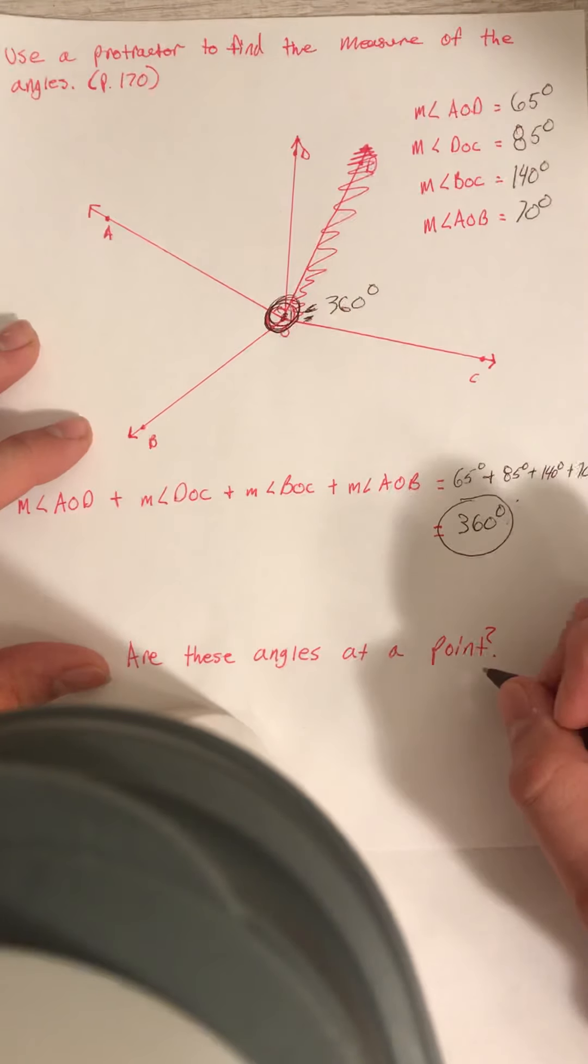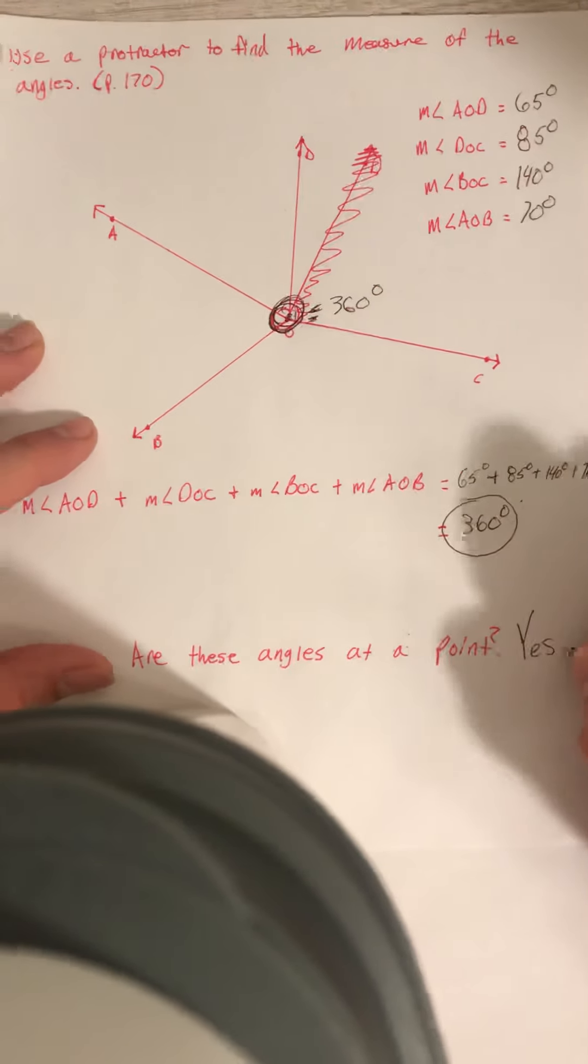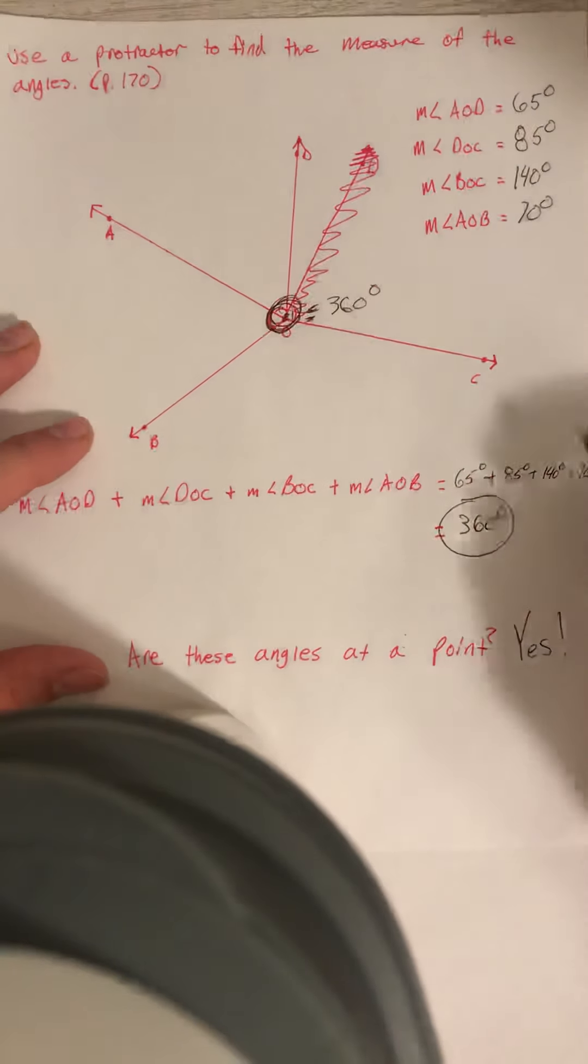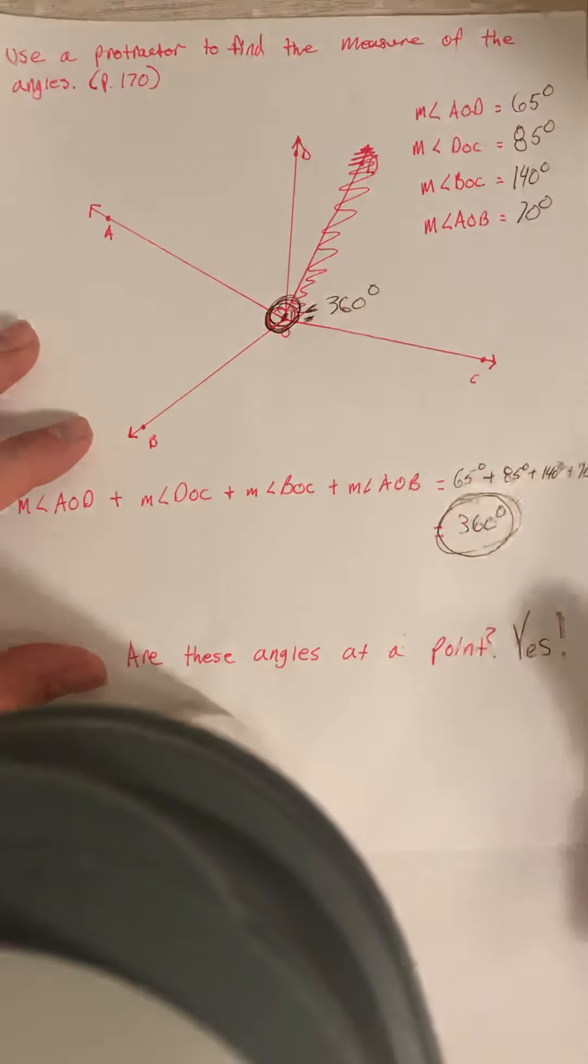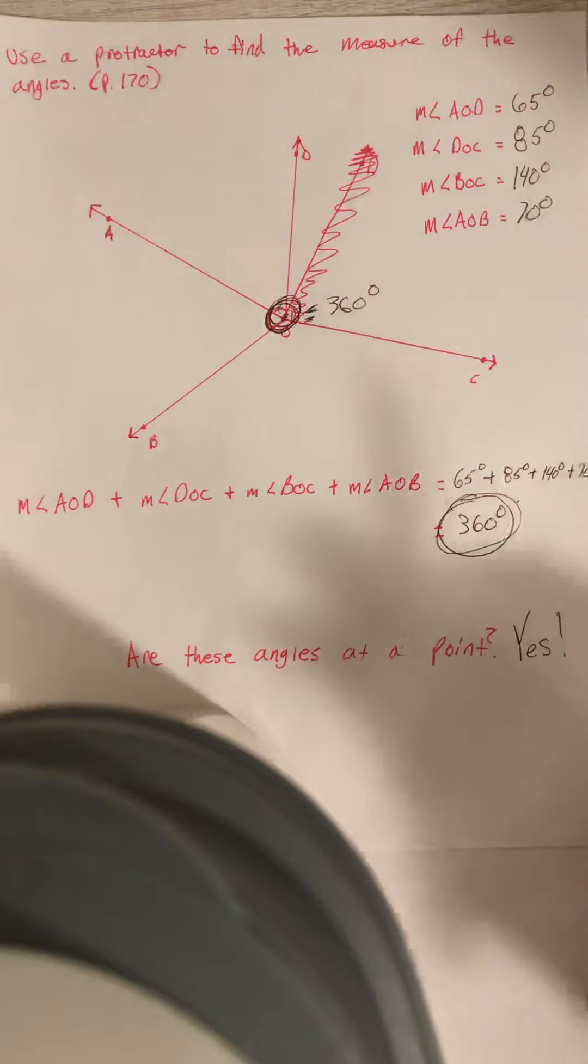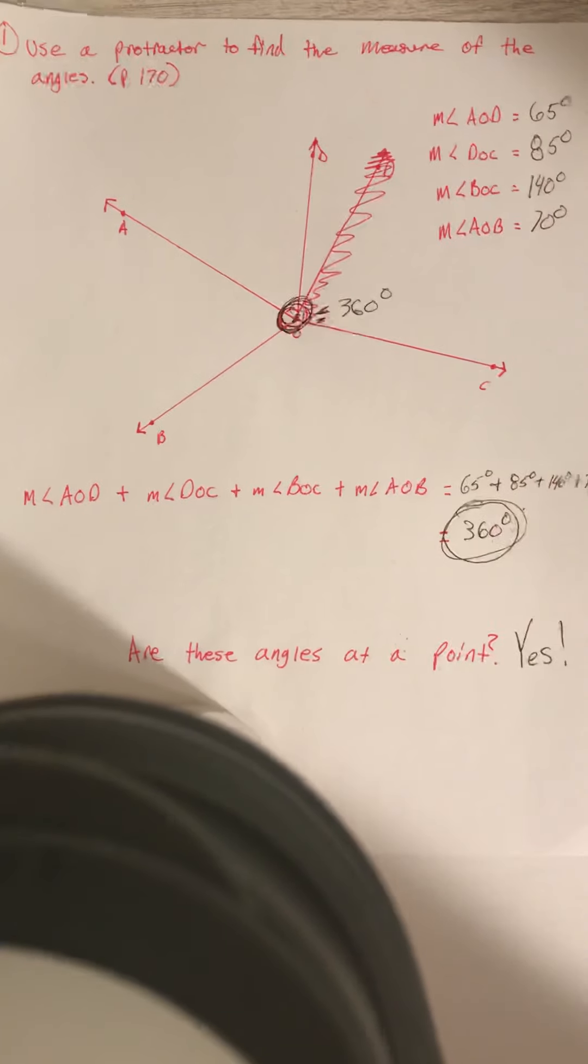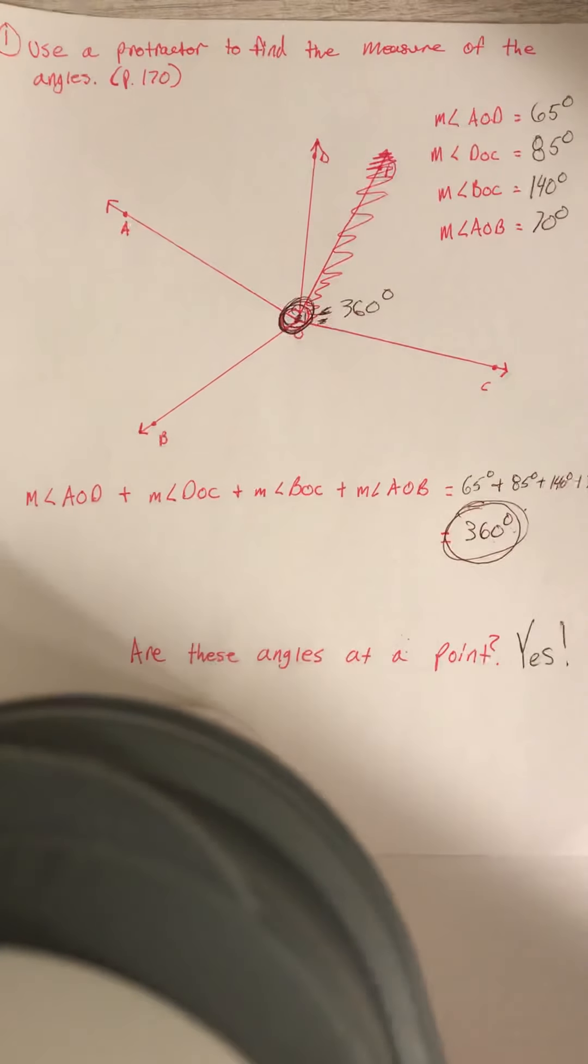So are these angles at a point? Yes. Why? Because their sum is 360 degrees. All right, that is question number one on page 170 in your student book.